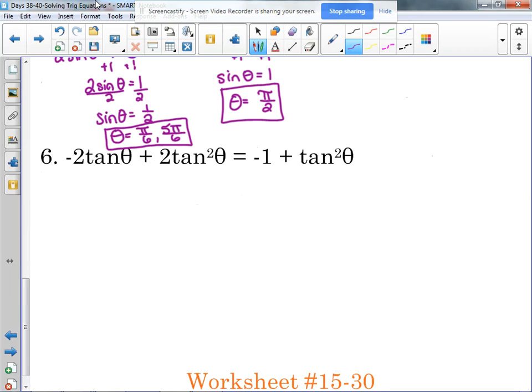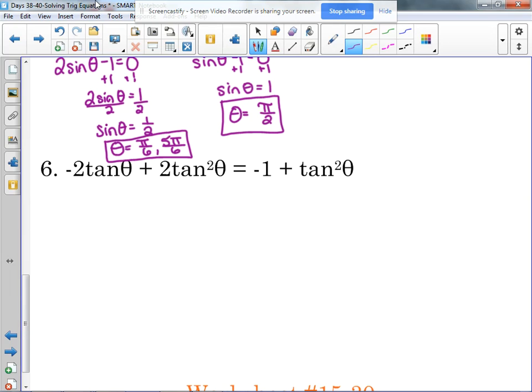All right, one more. Make sure we've got it. Let's look at a tangent example. This one's going to be like the one we just did. We have tangent squared on both sides. Let's move it so that it's positive, so let's subtract it from the right side. So that means we will add the one to the left side as well. So two tangent squared minus a tangent squared leaves us with one tangent squared of theta minus two tangent of theta plus one is equal to zero.